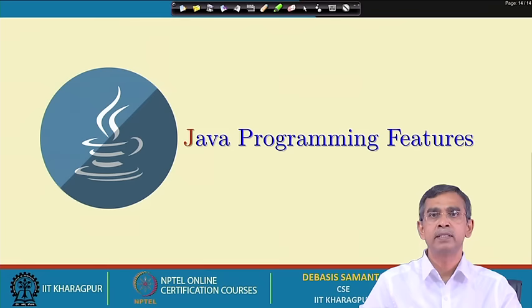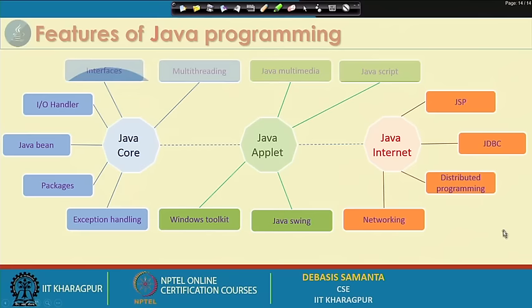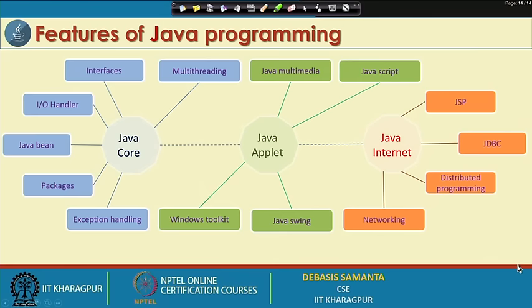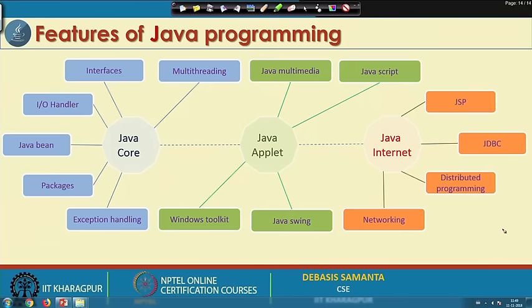Before finishing this lecture, let us have an idea of what Java programming can do for us. Whatever tasks Java programming can support, they can be divided into three broad categories. The first category is called Java core programming. Using Java core programming, we can develop many software applications — very large software, whether system software or application software. To do these things, the key topics to learn include multithreading, interfaces, input/output handling, Java beans, packages, and exception handling. If we learn all these concepts, we are fit for writing application software using Java core concepts.